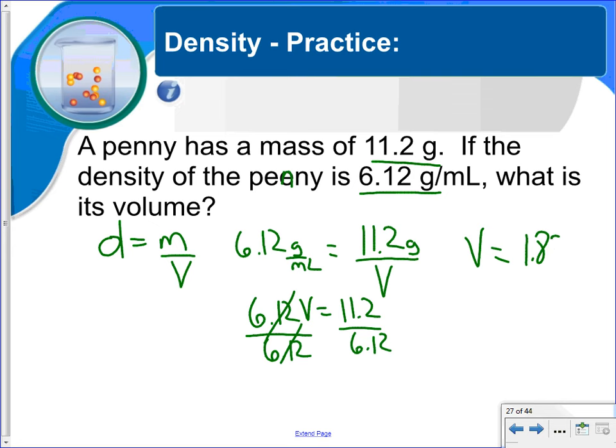So the volume is going to be the 11.2 divided by the 6.12. You get 1.83 milliliters. This has three significant digits, three significant digits, so the answer is three significant digits.